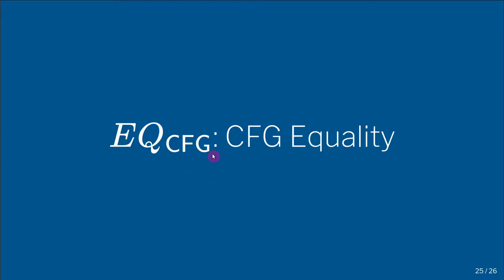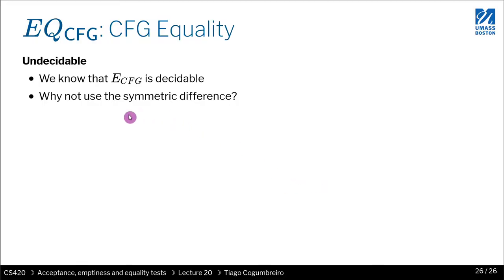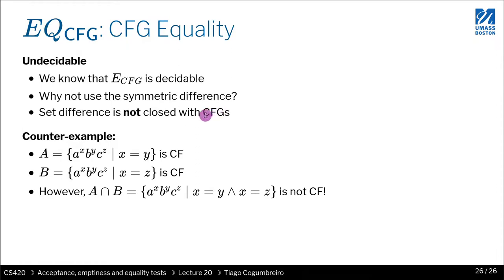So what about context-free grammars? Well, we know that knowing whether a grammar is empty or not, that's decidable. The whole thing is undecidable. But why? Well, we could try to use symmetric difference, but the problem is that symmetric difference can be represented as intersections. And if you think about it as intersection, both set subtraction and intersection are, they do not, they're not closed in context-free languages. So what does that mean?